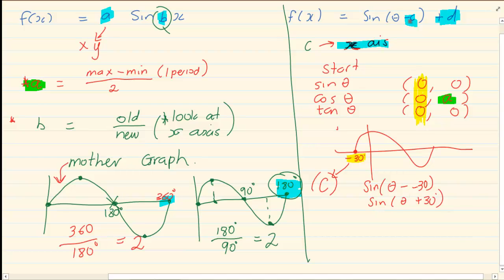But in the exam, if they ask you, what is the value of C? Then the value of C is minus 30. Alright. So, the C is dependent on the starting point of the x-axis.